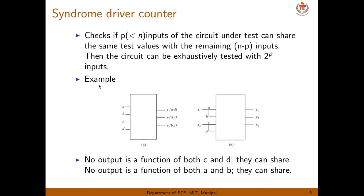What is the syndrome driver? You are reducing inputs that share a common source of signal. So here, four inputs are there, but AB and CD can share the same common signal. We can reduce the number of test vectors from 2 power 4 to 2 power 2.